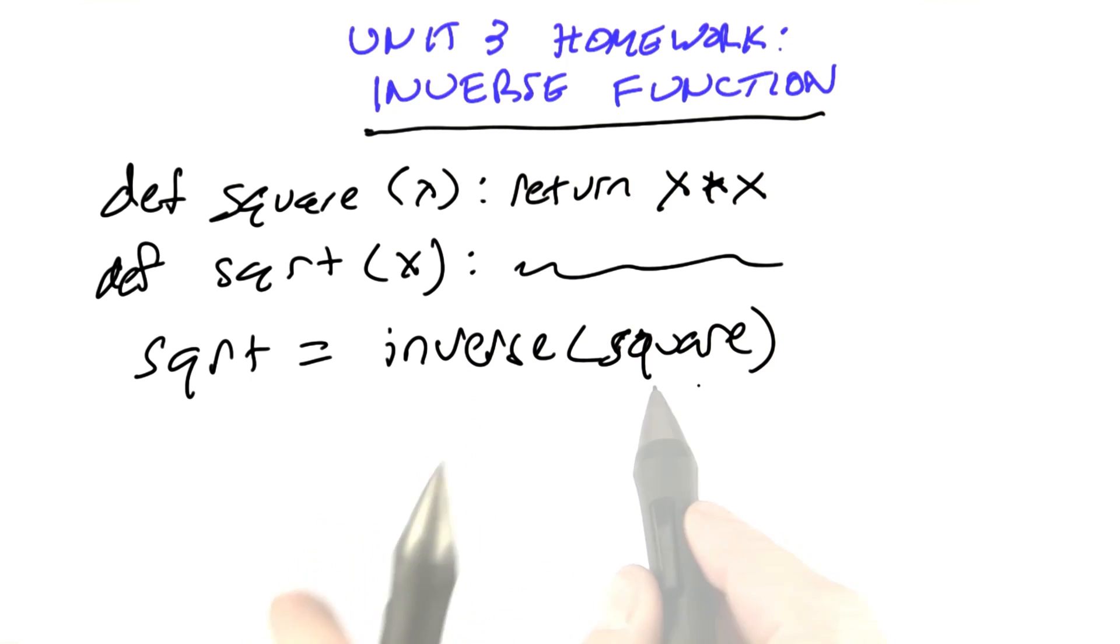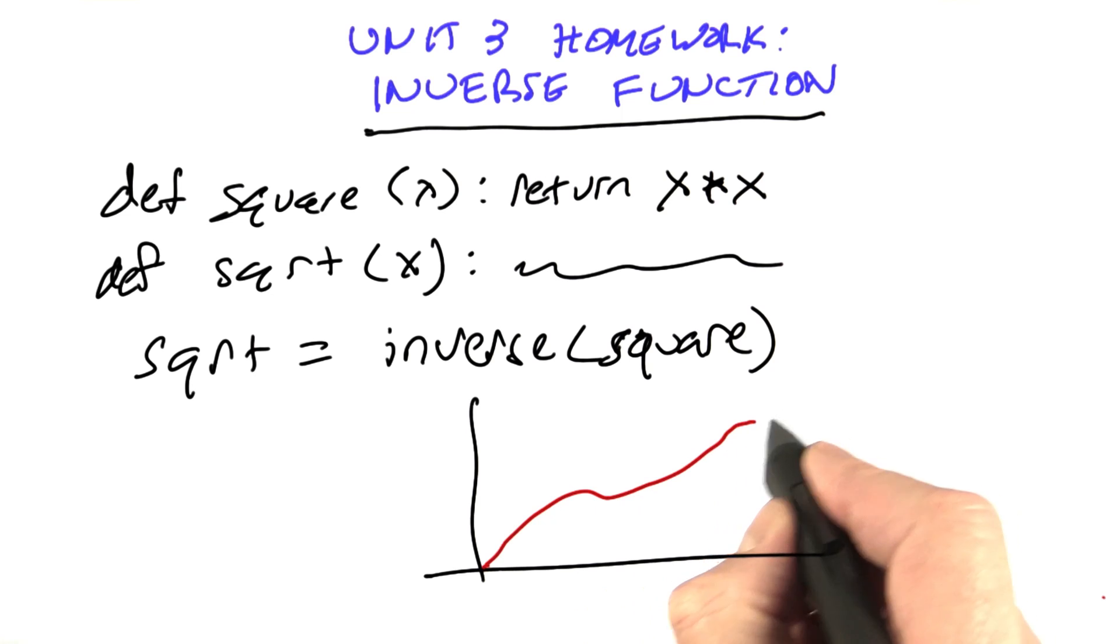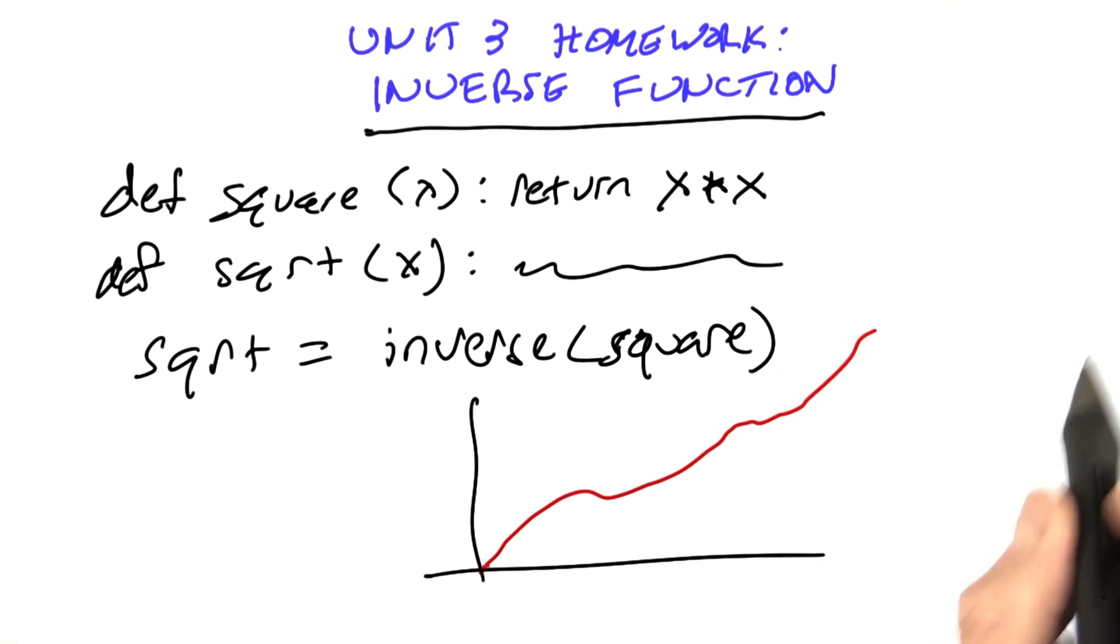In this homework, we're going to do just that. We're going to do it in a slightly restricted sense. We're only going to deal with functions that are defined on the non-negative numbers and are monotonically increasing, so they have to keep on going up. That way they have a defined inverse. Functions that are not monotonic don't have a single inverse because there's a 2 to 1 mapping.